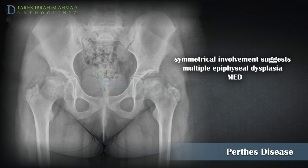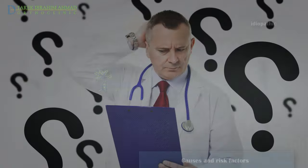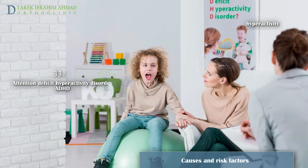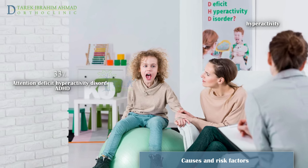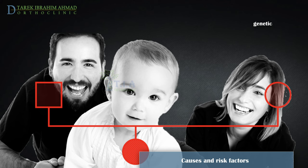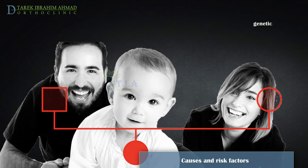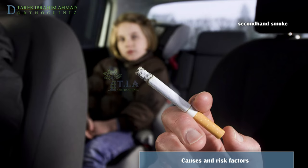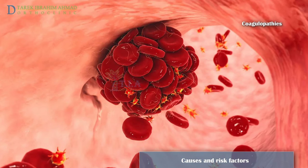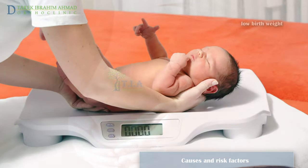If both hips are affected at the same stage of disease, that suggests multiple epiphyseal dysplasia (MED). The cause of Perthes' disease is unknown. It often affects children who are very active and is associated with ADHD in thirty-three percent of cases. There may be a genetic link; between two and ten percent of children with Perthes' disease have at least one family member with the disease. Exposure to secondhand smoke, blood clotting disorders, steroid use, and low birth weight may also increase risk.